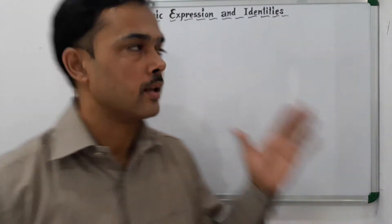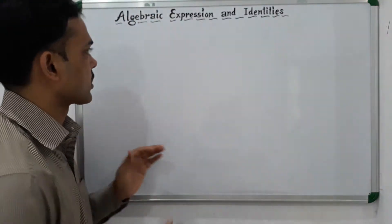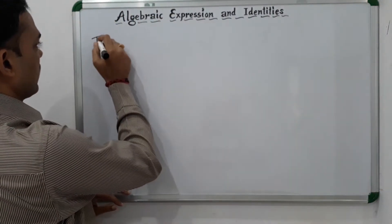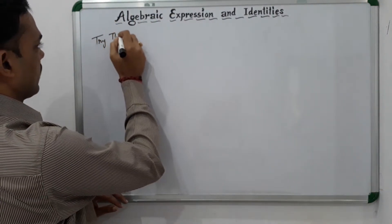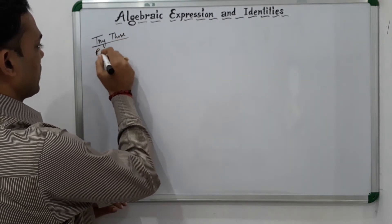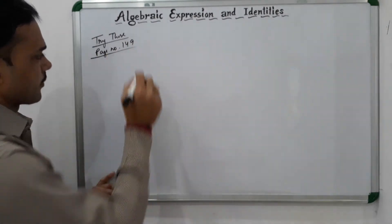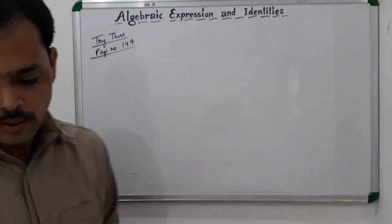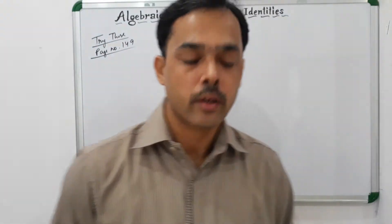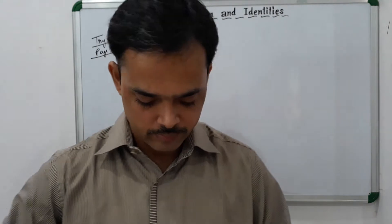Jai and dear students, today we are going to try these of page number 149 of the chapter algebraic expressions and identities. We'll be doing question number 1 and 3.